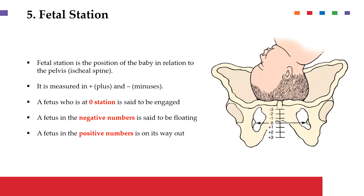The fifth and important factor is fetal station, which is the position of the fetal head in relation to the ischial spines. The position of the ischial spine is given a station of 0. Anything above the ischial spine — meaning the fetal head is still floating within the pelvis — is given a negative value. Anything below, with a positive sign, means the fetal head has passed the ischial spine and is on its way out. Full engagement, where the fetal head is at the ischial spine, is station 0.